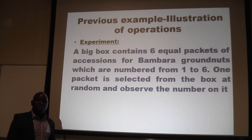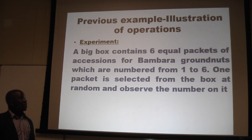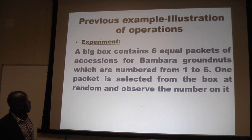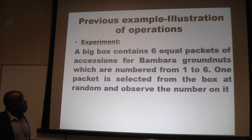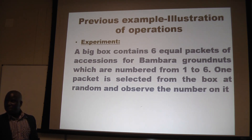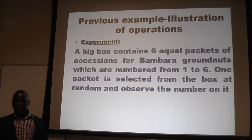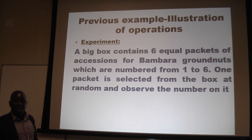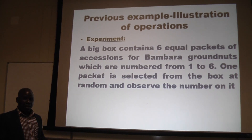We are now going to illustrate sample space, events, and operations — that is, the union, intersection, and complement — using the example of the big box containing six equal packets of Bambara groundnut accessions numbered one to six. One person picks a packet at random and observes the number. We will answer questions about the sample space, illustrate A union B, A intersection B, and also the concept of mutually exclusive events.